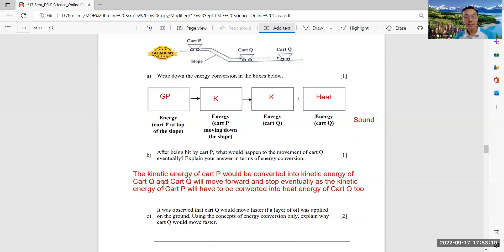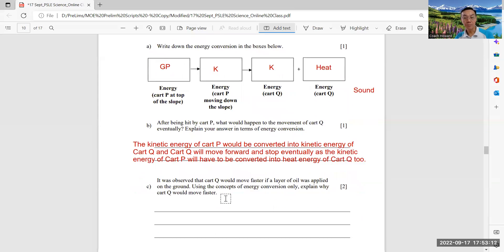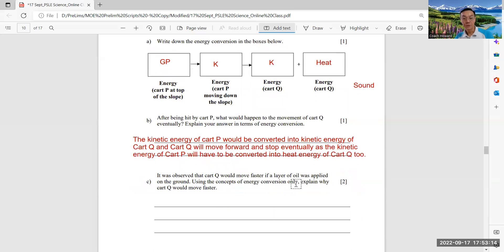Okay, next you add lubricant, right? They say observe it move faster. So using energy concept, explain why cart Q would move faster. So you should say the layer of oil will act as a lubricant, so there'll be less heat energy between the wheels of cart Q and the ground. So less kinetic energy from cart Q will be needed to convert into heat energy.